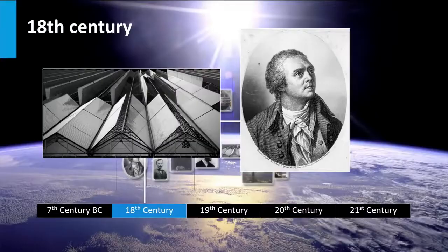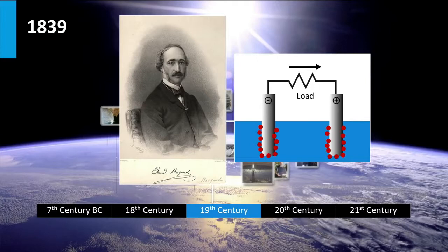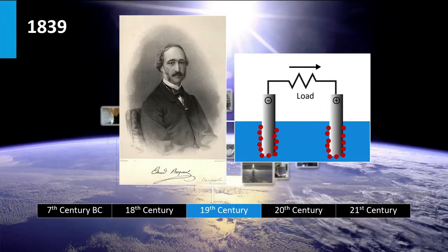In 1839 the scientist Edmund Becquerel, at an age of 19 years, discovered the photovoltaic effect. The photovoltaic effect is the generation of voltage or current in a material when exposed to light. He observed this effect in an electrolytic cell. The cell was made out of two platinum electrodes placed in an electrolyte. An electrolyte is an electrically conducting solution; in this case he used silver chloride placed in an acidic solution. By shining light on it, he observed that the current in the cell was enhanced.